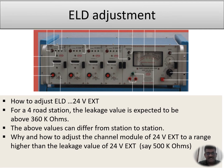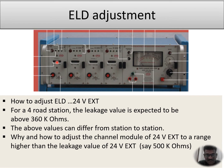ELD adjustment — how to adjust 24 volts external. Taking one example of a submodule: 24 volts external. For a four-hour station the leakage value is expected to be above 360 kilo ohms. This is a reference value given by RDSO, but it can vary from station to station depending upon the quality of the cables. Let us say presently it is 5 mega ohms, and we want to adjust 24 volts external to 500 kilo ohms.